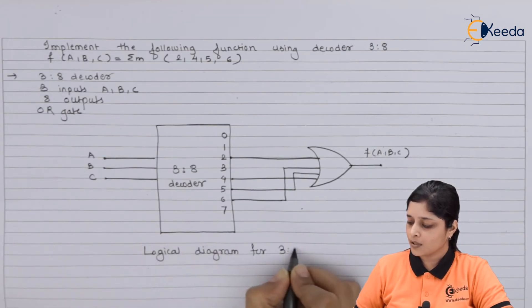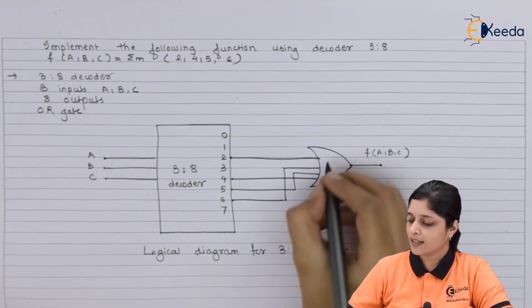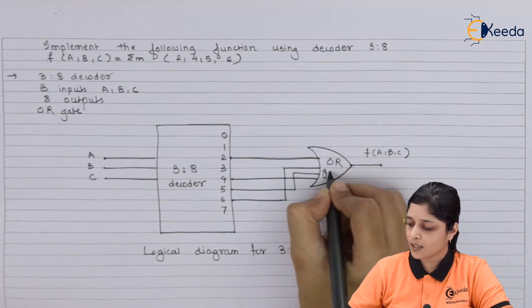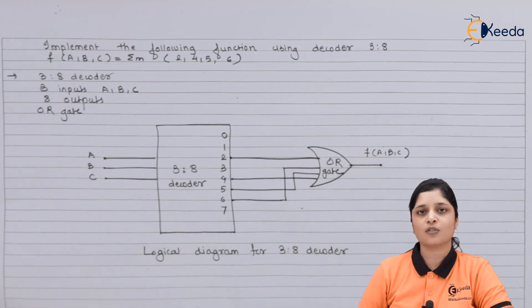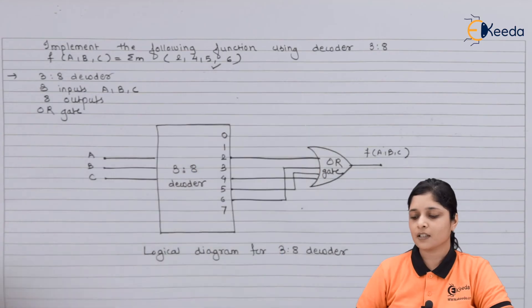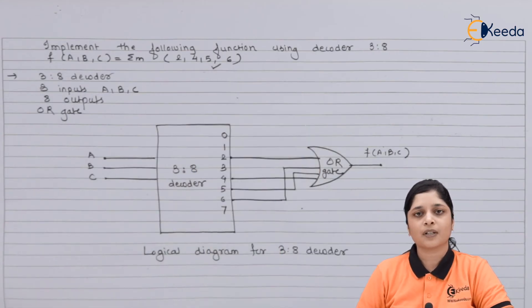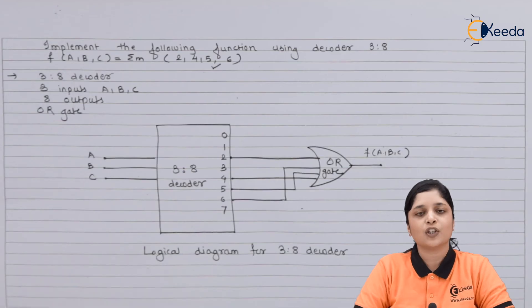For 3-to-8 decoder considering the OR gate for realization purpose and connecting all the terms present in the given expression to the OR gate. So this is all about the numerical based on the decoder. Thank you for watching this video, stay tuned with Ikeda and subscribe to Ikeda.